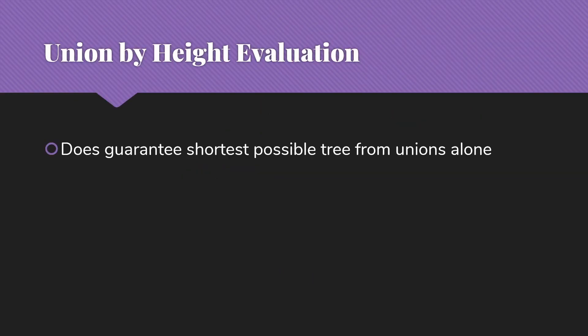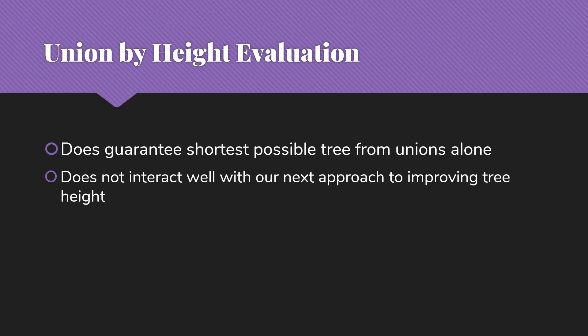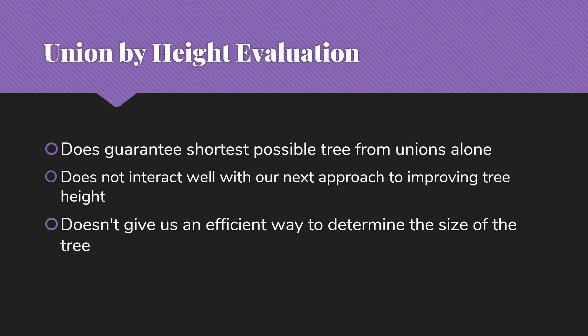Union by height guarantees the shortest possible tree we can get from unions alone. However, union by height is not usually our choice — we usually stick with union by size. One reason is that in the next video we'll look at an approach to improving tree height that does not interact well with union by height because we would lose track of what the heights actually are, but does work well with union by size. We also find it convenient to know how big the trees are, especially to know when the union causes all items to be in the same set, and there's no convenient way to do that with union by height.